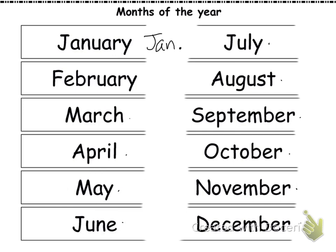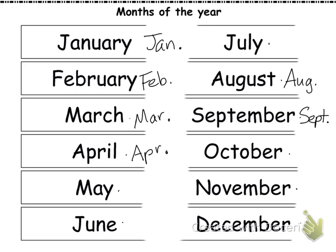Let's go ahead and write the other abbreviations. February is Feb., March is Mar., April is Apr., May is just May, June is June, July is July, August is Aug., September is Sept., October is Oct., November is Nov., and December is Dec. You'll notice only one of these months has four letters in its abbreviation, and that's September. All these abbreviations use the first three or four letters of the name of the month.